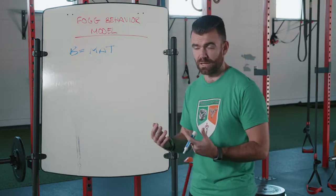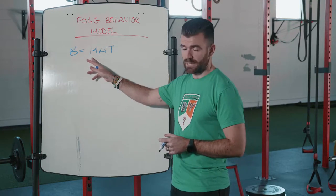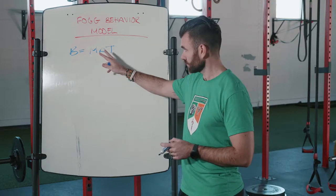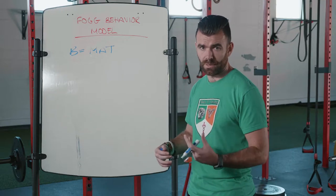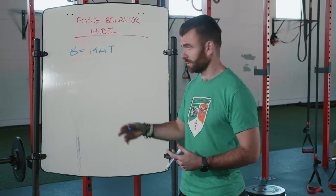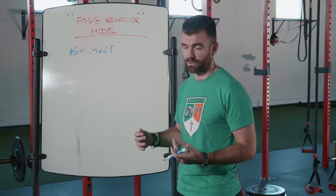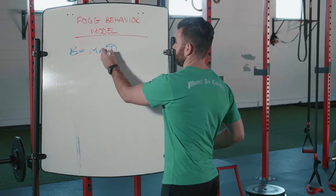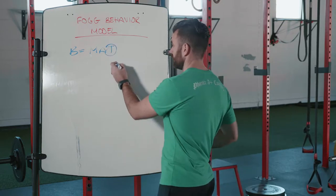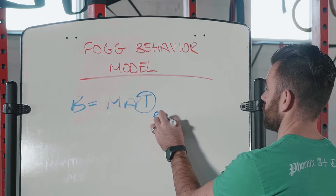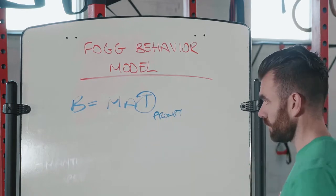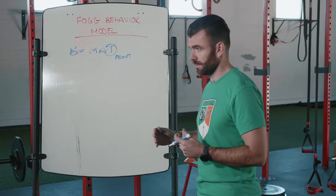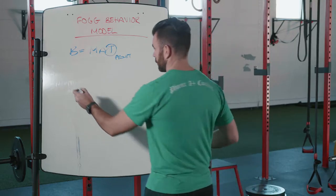M is your motivation, A is your actual ability to do the behavior, and then T is your trigger, or your trigger can be a prompt or your call to action. So you can look at it like this - a little visual for you.